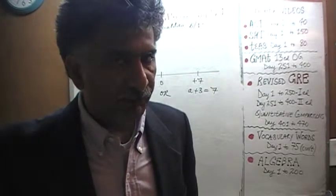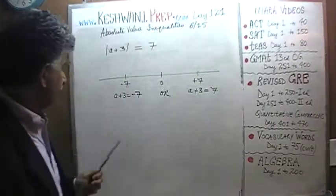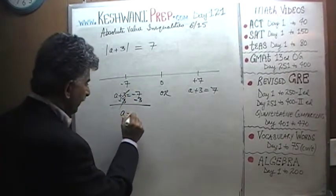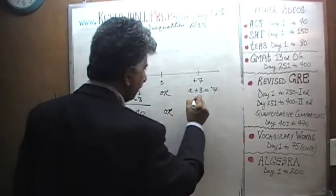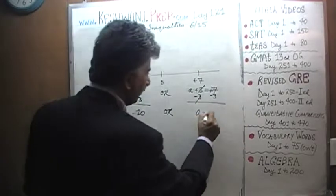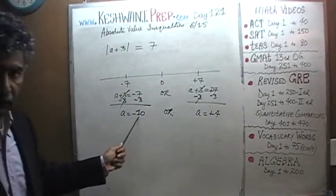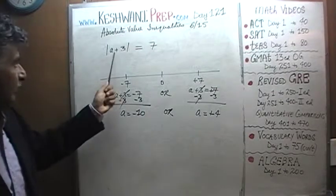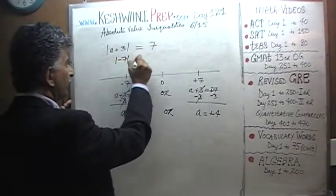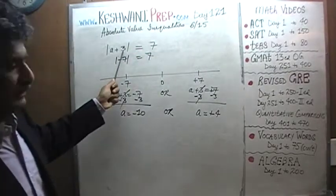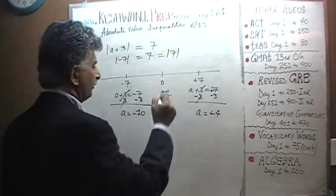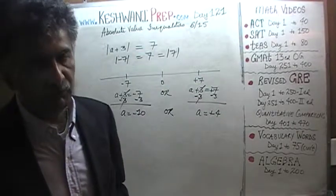We want to find out what a is equal to, so let's solve for a. Subtract 3 from both sides: positive 3 cancels the negative 3, and a would be either equal to negative 10, or subtracting 3 from positive 7 gives us positive 4. When a equals negative 10, negative 10 plus 3 is negative 7, and the absolute value of negative 7 is 7. When a equals 4, 4 plus 3 is 7, and the absolute value of 7 is 7. So that was very straightforward.